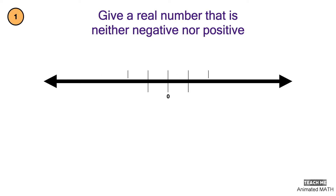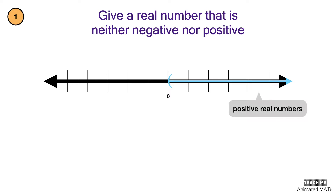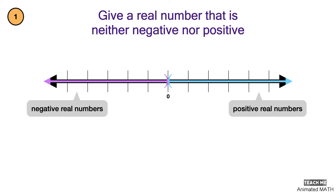Real numbers that are positive are greater than zero. Real numbers that are negative are less than zero. The answer is zero.